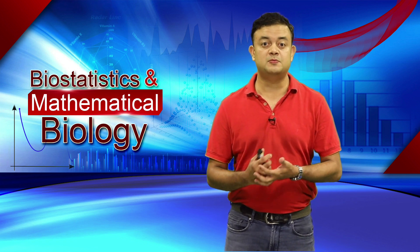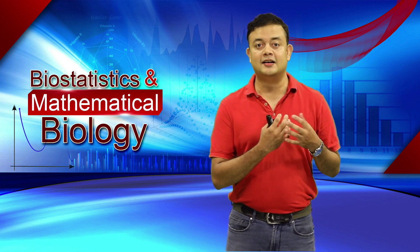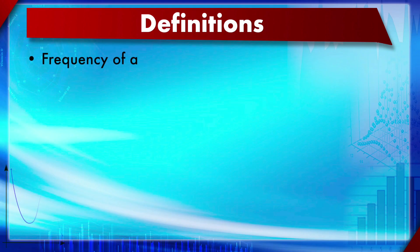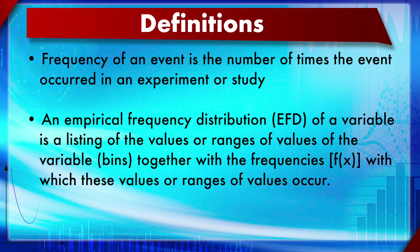The term empirical means something to do with experiment or raw data — you are actually generating the data by some experiment, like a lab experiment. Frequency of an event is the number of times the event occurred in an experiment or study. For example, how many times do you go to cinema in one month or one year — that is called the frequency.